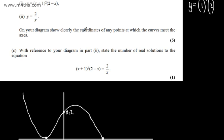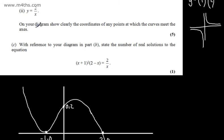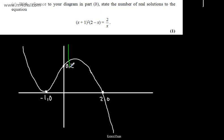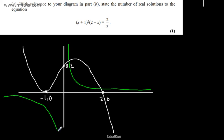Now let's draw 2 over x. This is the reciprocal graph. The shape of 1 over x, with a scale factor stretch of 2 in the y direction. So it comes round like this in the first quadrant, asymptoting toward the axes, and similarly in the third quadrant — something like that to the left.